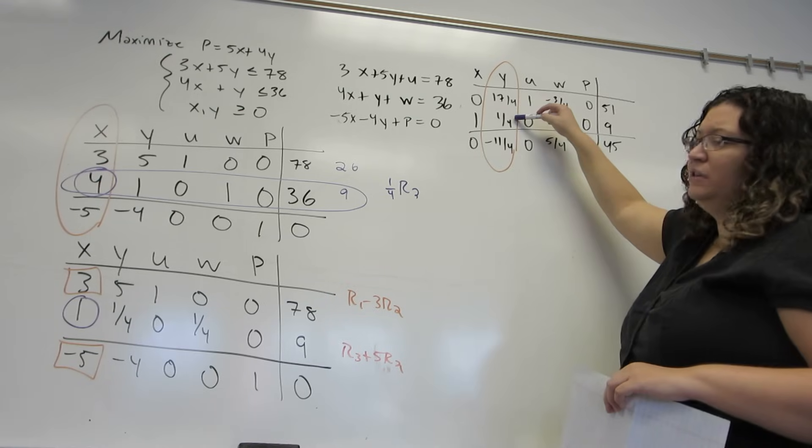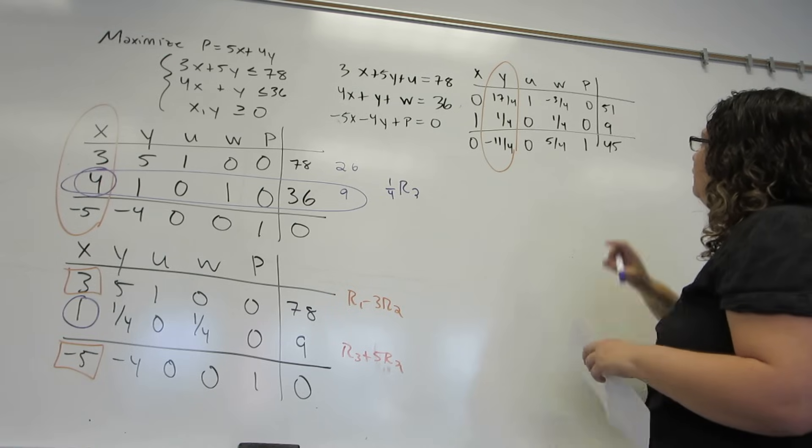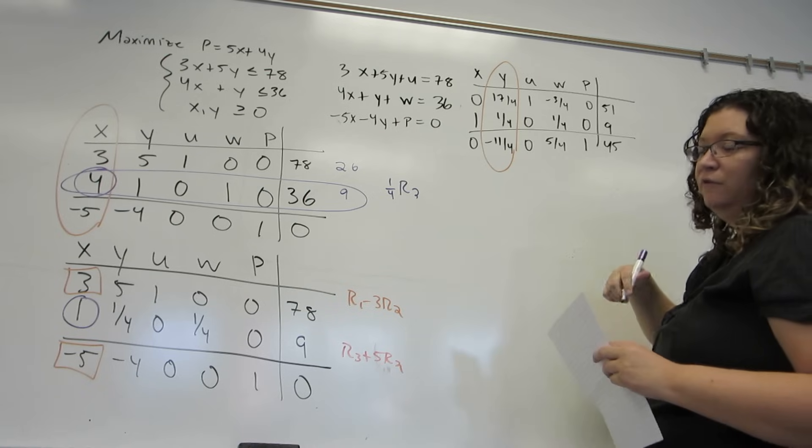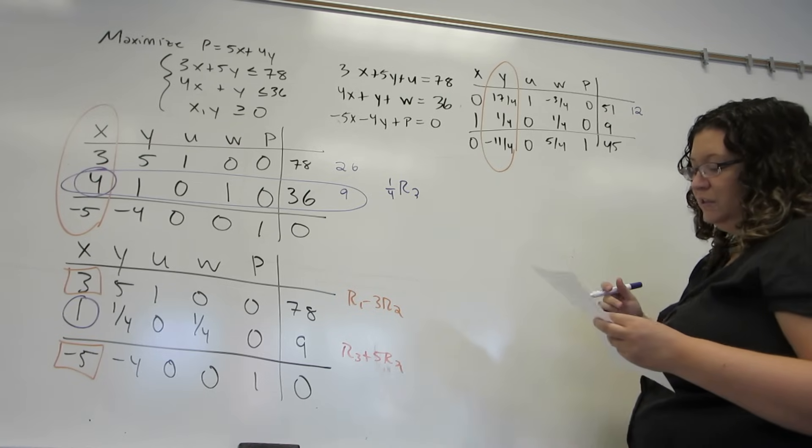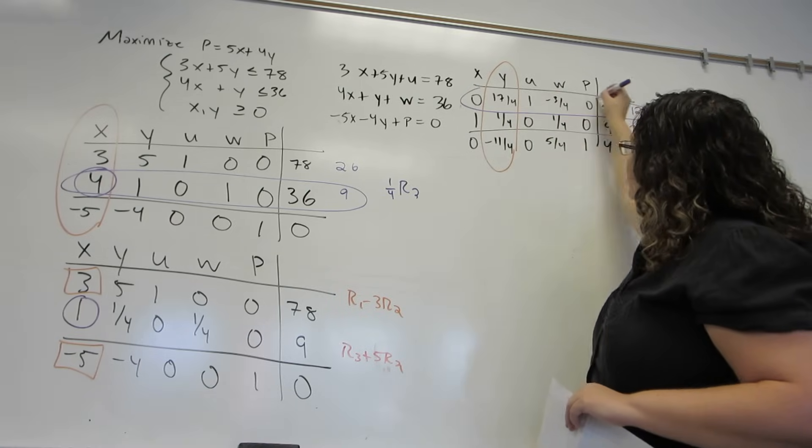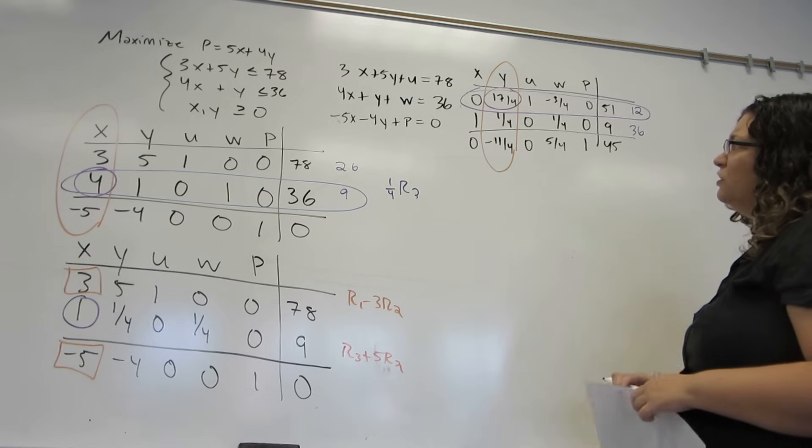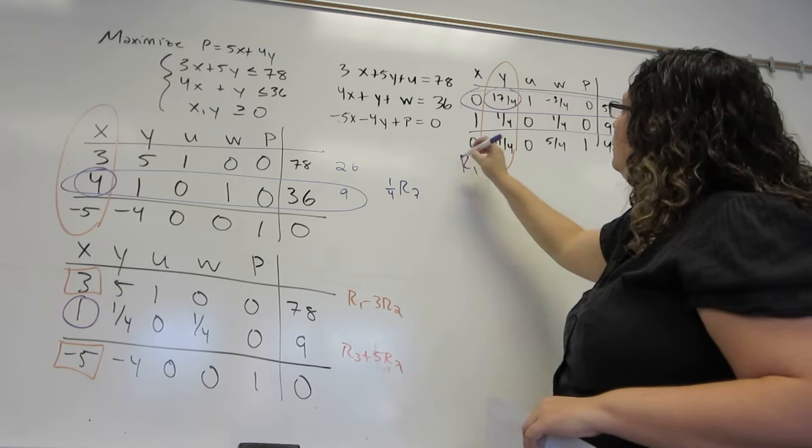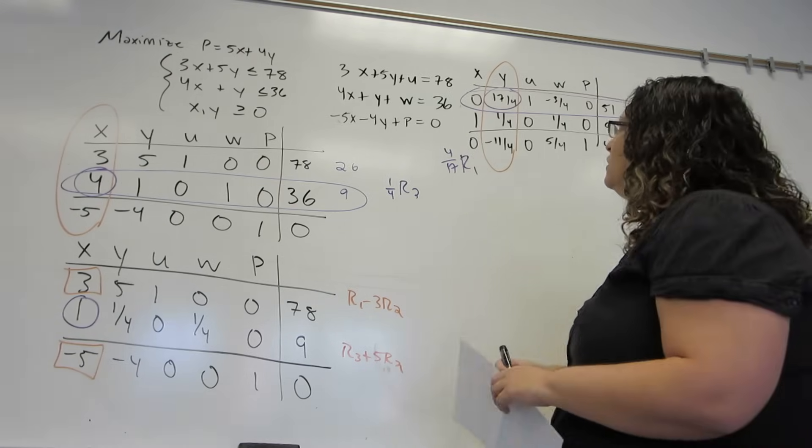Then I'm going to take each of the numbers in that column and divide them into the numbers over here. So I have 51 divided by 17 fourths, which is the same as 51 times 4 over 17, gives me 12. 9 divided by 1 fourth is the same as 9 times 4, gives me 36. I choose the one that is smallest. So this is my pivot element. Now, I need that to become a 1. And so I'm going to replace the first row by 4 seventeenths times itself, which is the same as dividing by that number that's already there.